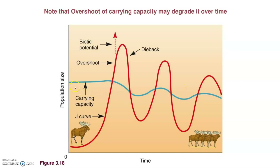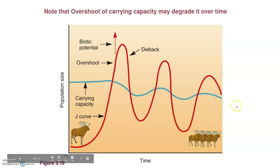Carrying capacity, because of resource use, can decrease over time. When you have overshoot, you have tremendous use of resources, and that might degrade the resources available in the future. So the population that can be sustained can actually decrease over time. There's a lot of math involved that we're not going to get into, but you just have to know the basic concept.